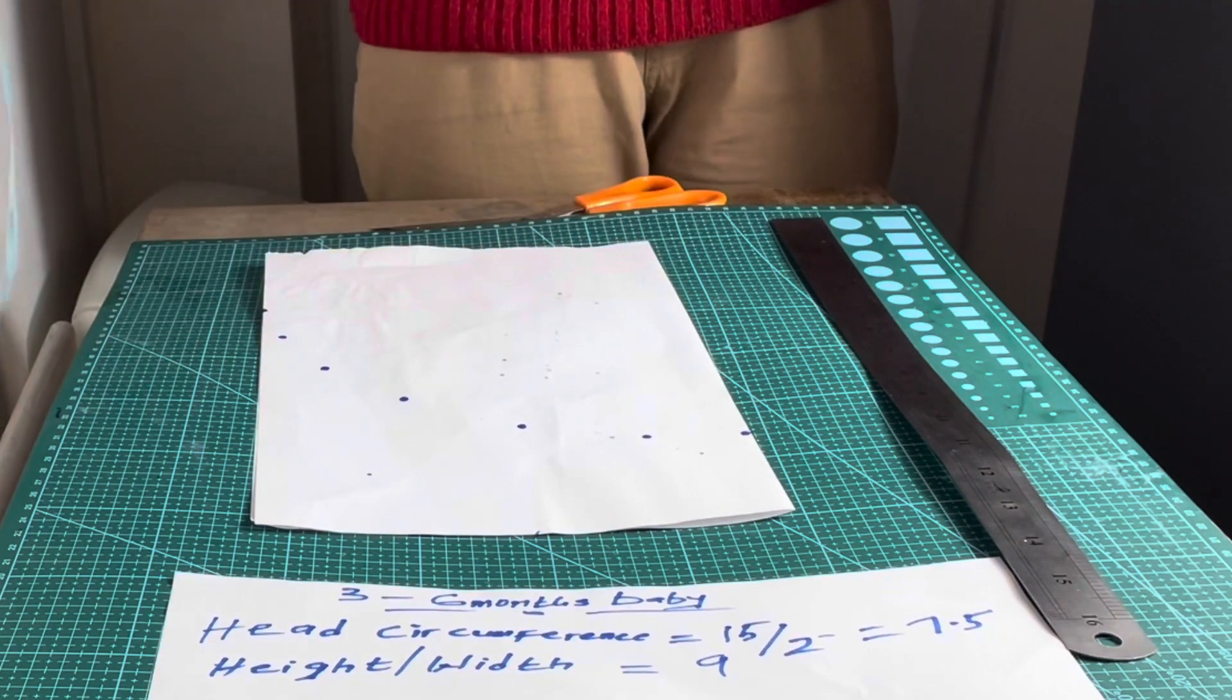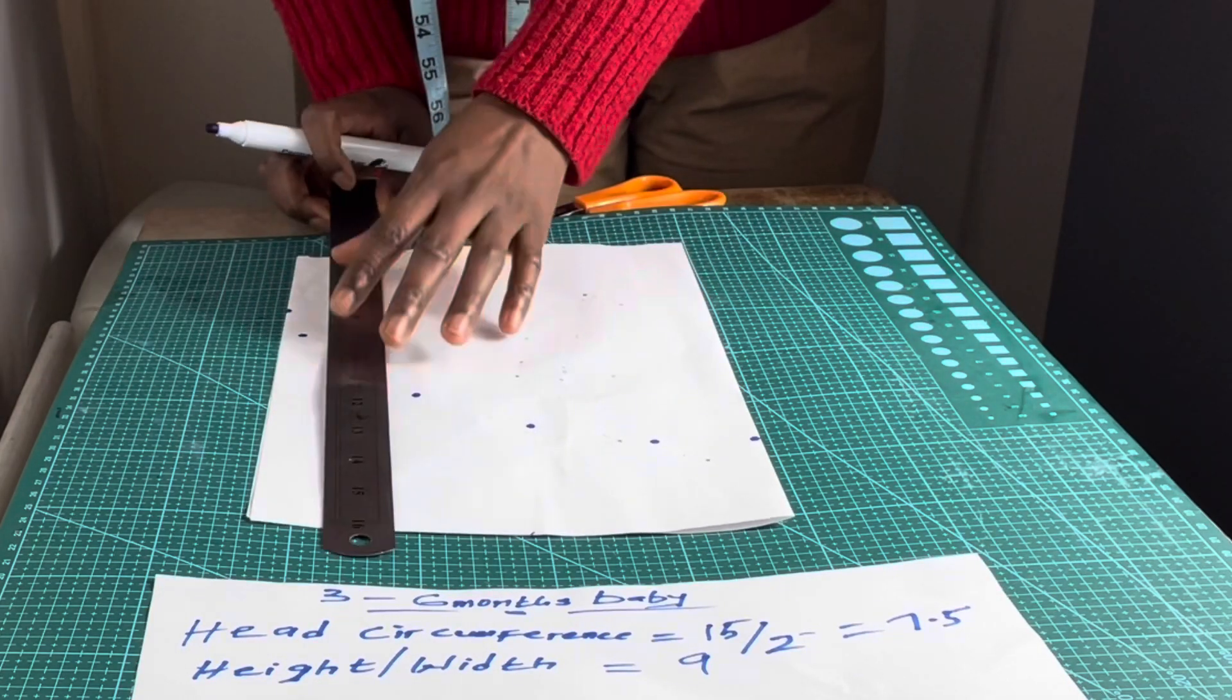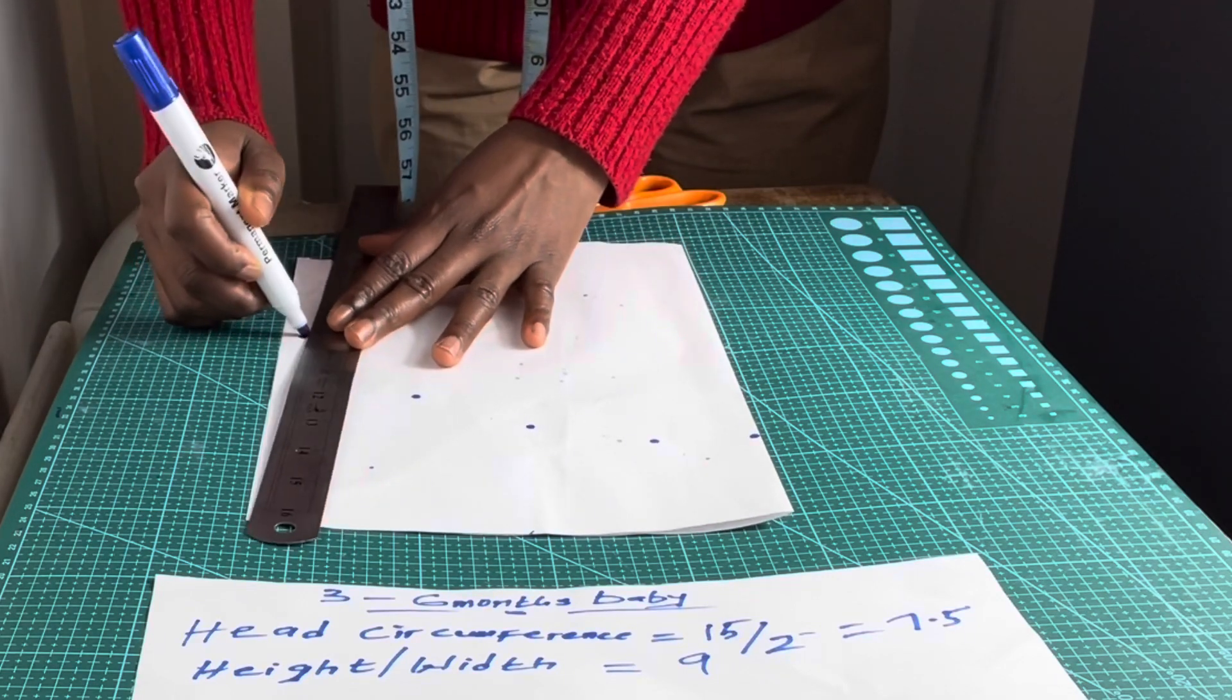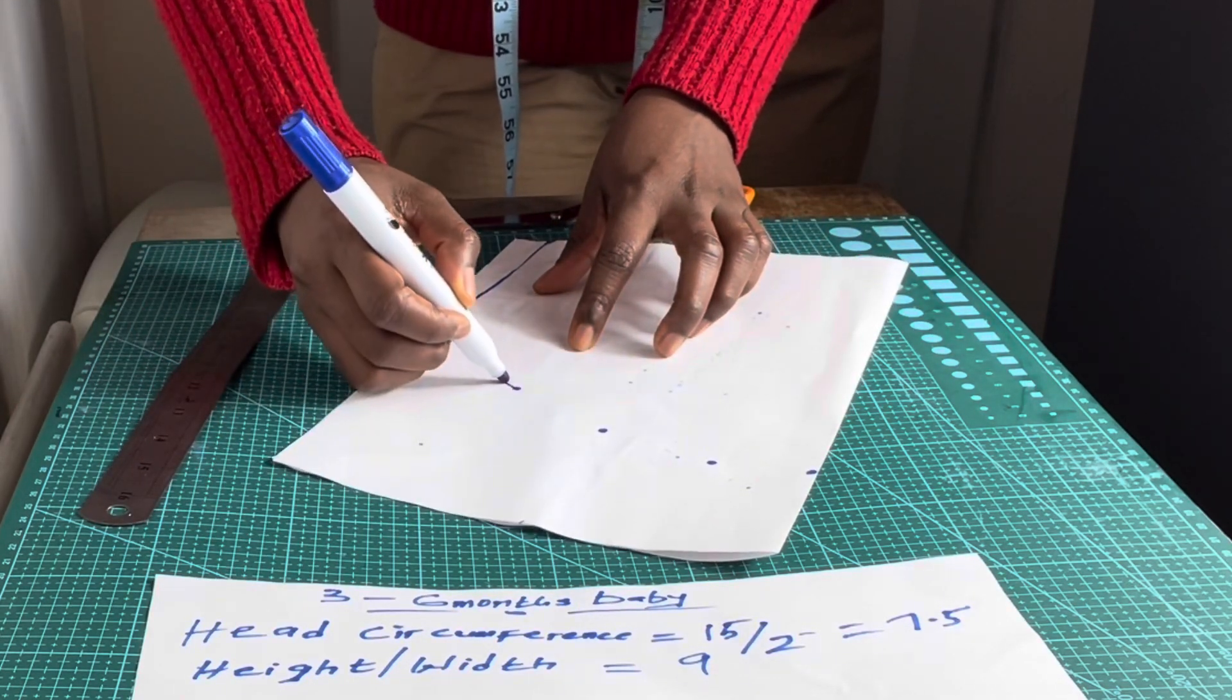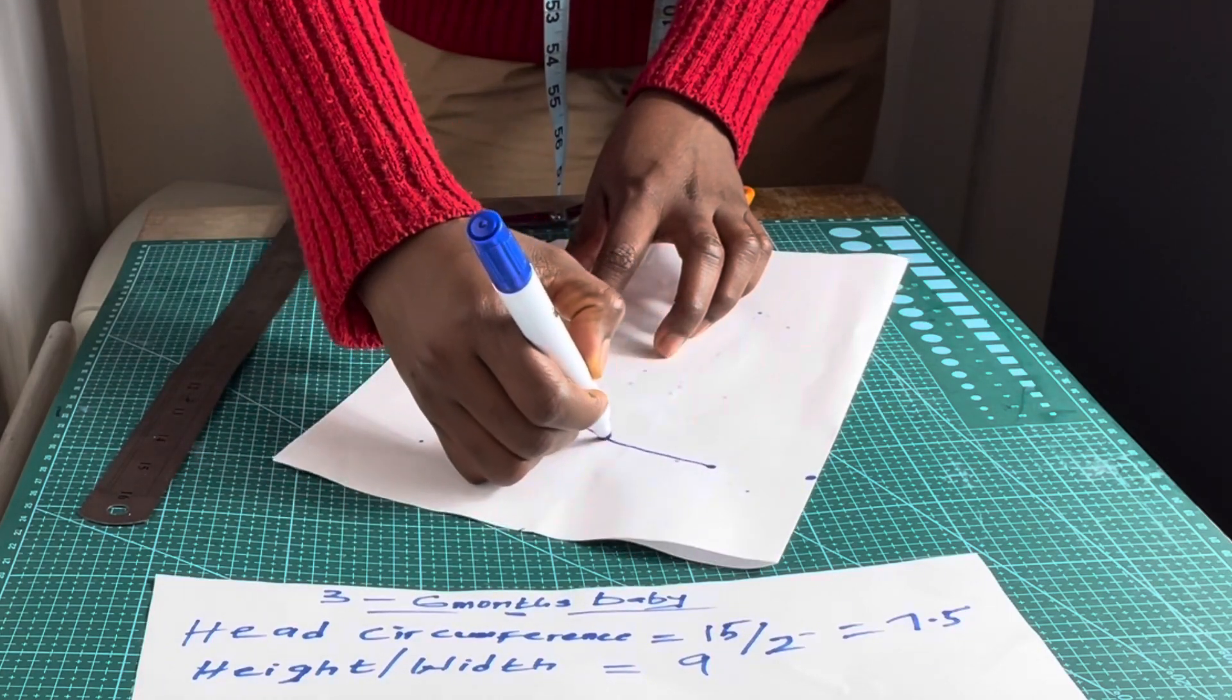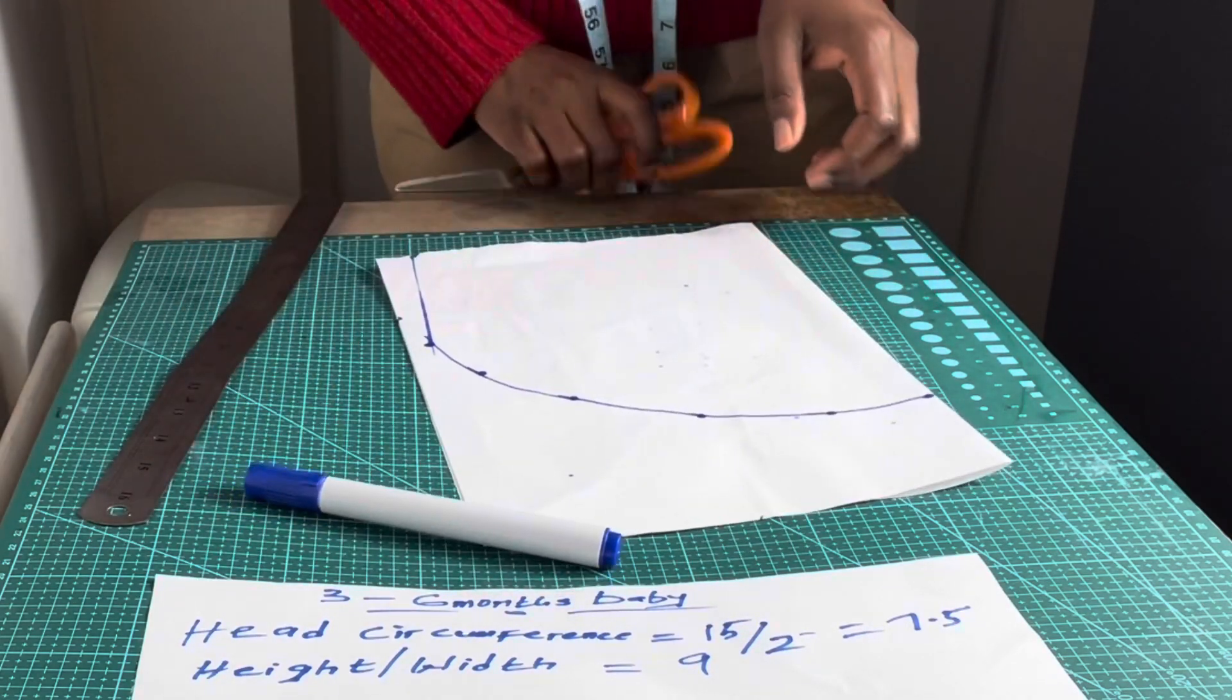That's pretty much how to do it. This is 7.5 inches with a mark. Join the line across. Now I'm going to be cutting it out.